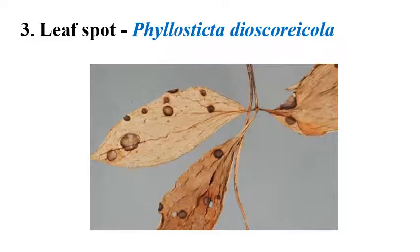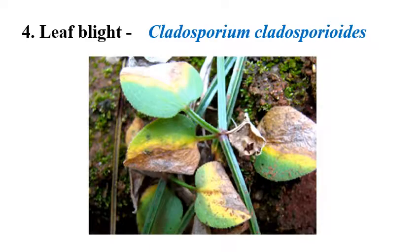The leaf spot caused by Phyllostrictor dyscoricola shows the same symptoms: small spots appear initially, which coalesce, and big spots can be seen in the later stages.